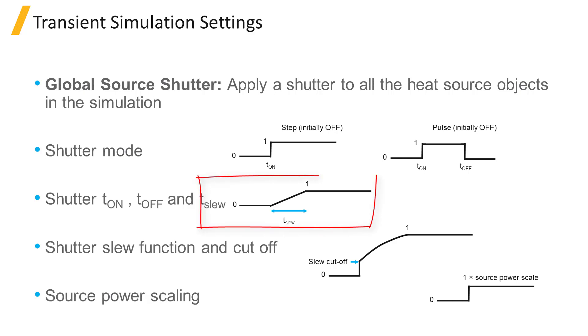Shutter slew sets a slew in the stepping of the shutter for a gradual change in source power rather than abrupt. This feature is useful in helping the solver to converge where a sharp step in the shutter can make the simulation diverge.